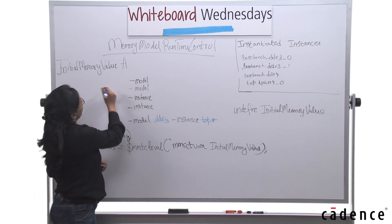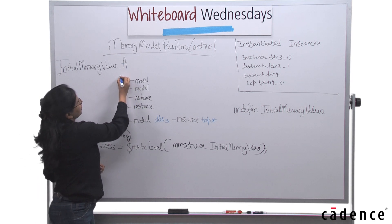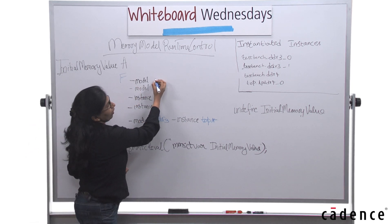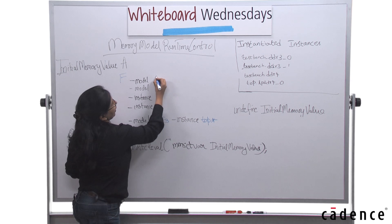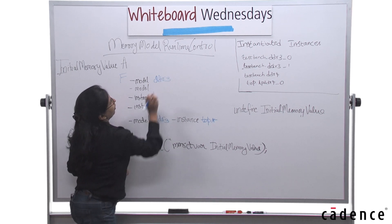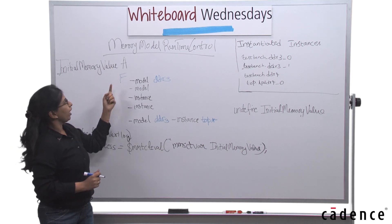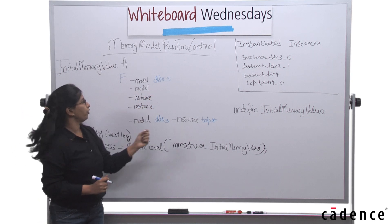If I said initial memory value A, now let's assume I change this to F, and I say dash model, and I can say ddr3. What would this mean? This means that I'm changing my initial memory value to F for model ddr3.